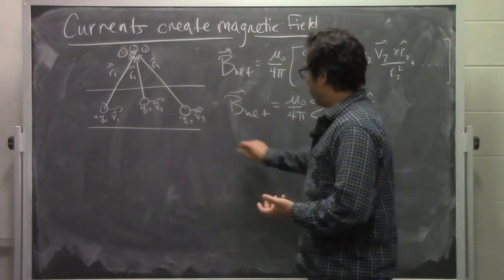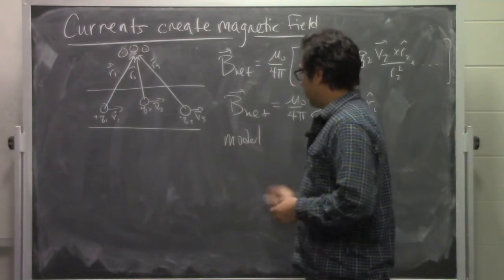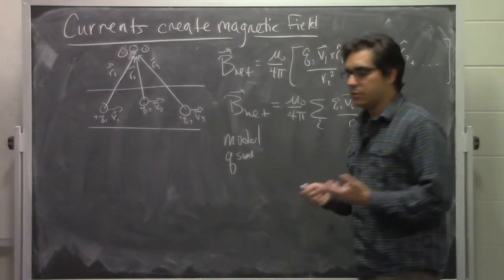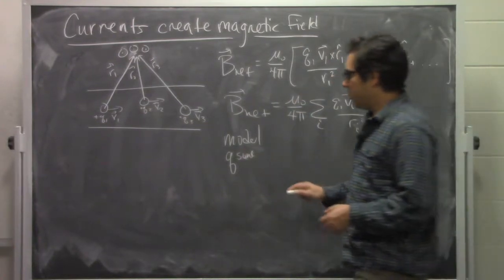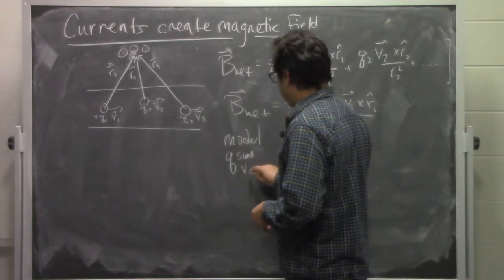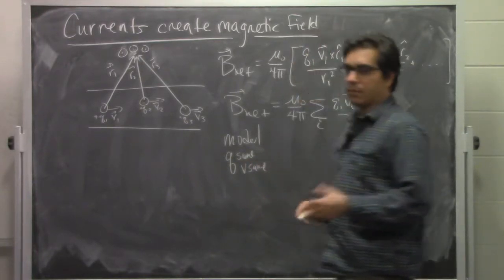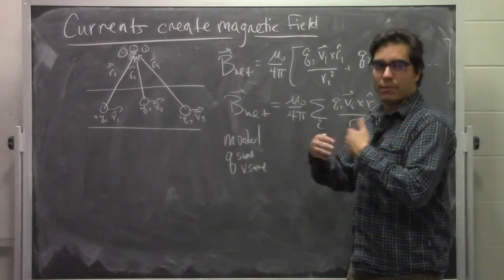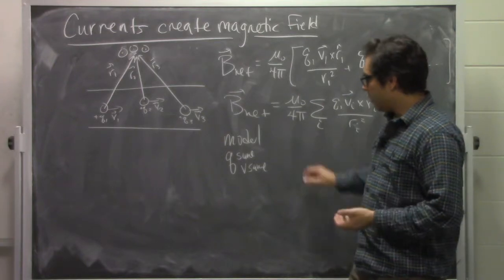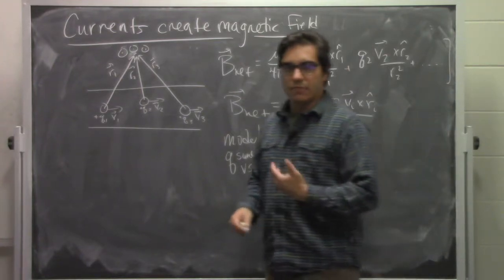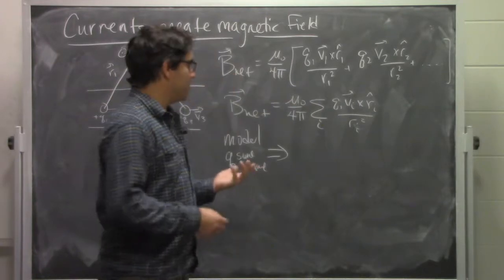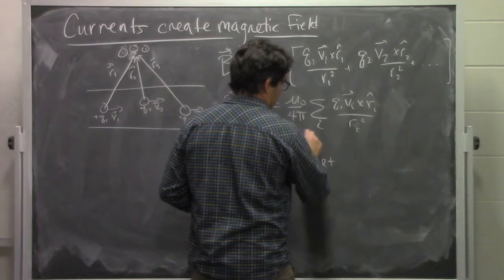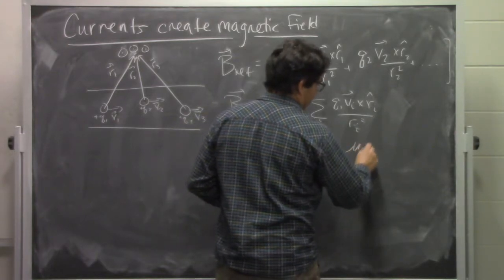The model itself that we have is that all the Q's are the same, that is the charge carriers are all the same kind of thing, and that they all move with the same velocity, namely the drift speed. The magnetic field will have a slightly simpler description.